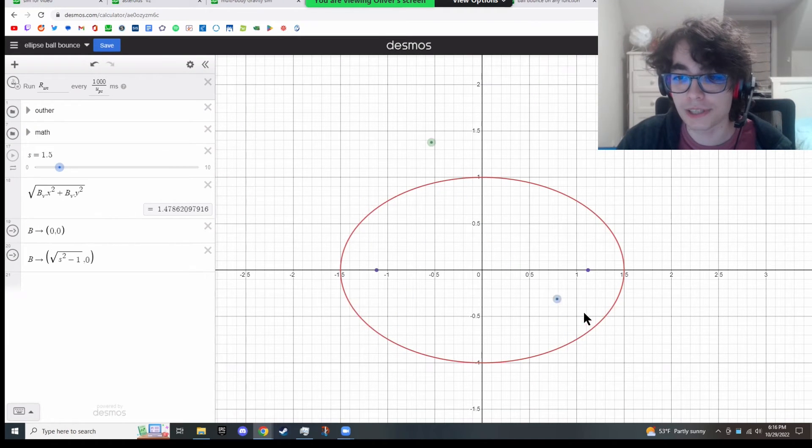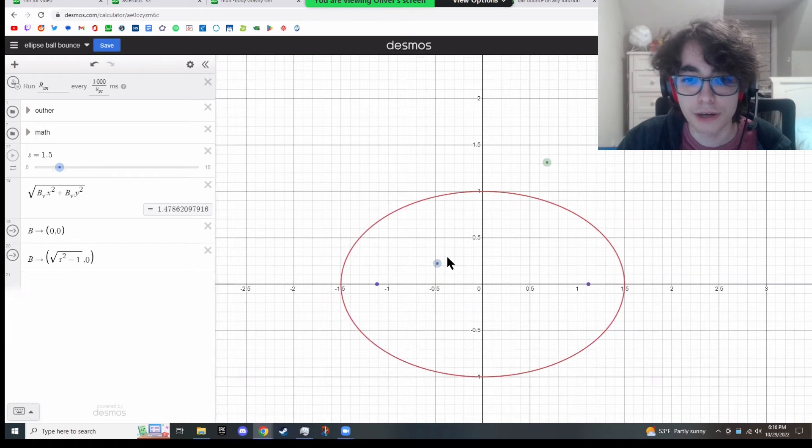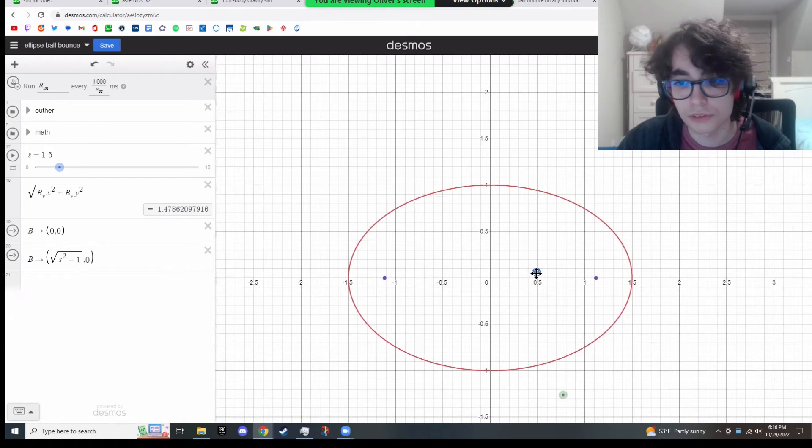When it's inside these two purple dots, the foci, it'll stay bouncing inside. However, if I can grab it and get it outside, it'll always bounce outside of them.